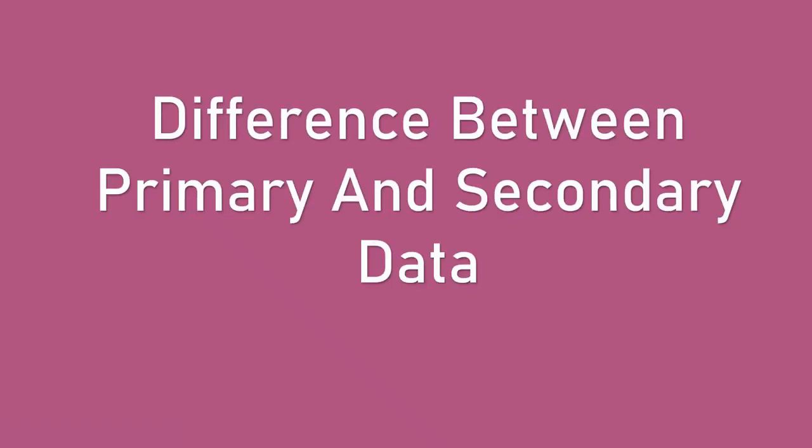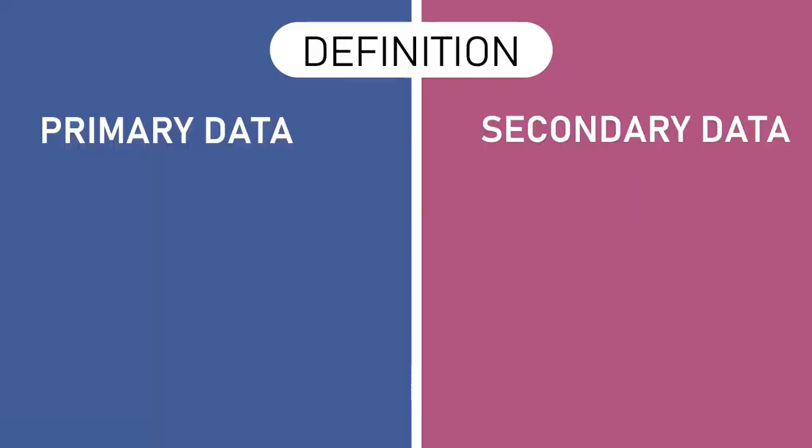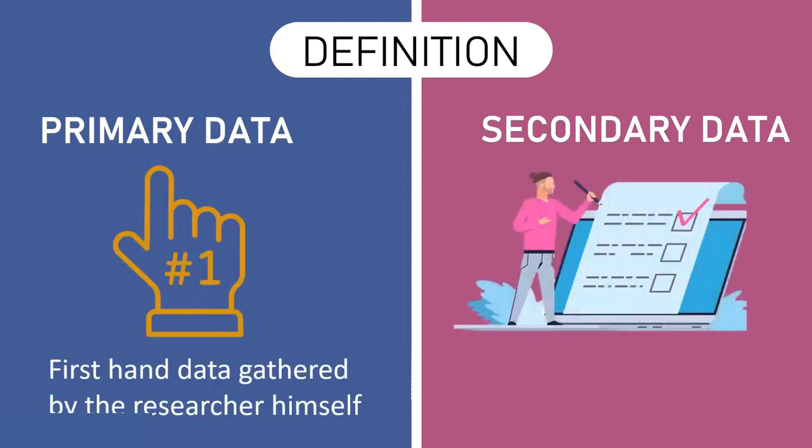Difference between primary and secondary data in research. Definition: Primary data refers to the first-hand data gathered by the researcher himself, whereas secondary data means data collected by someone else earlier.